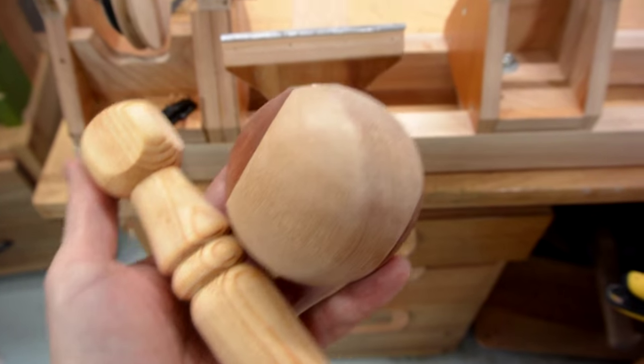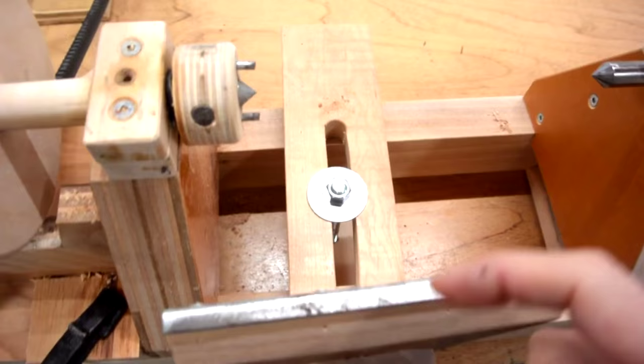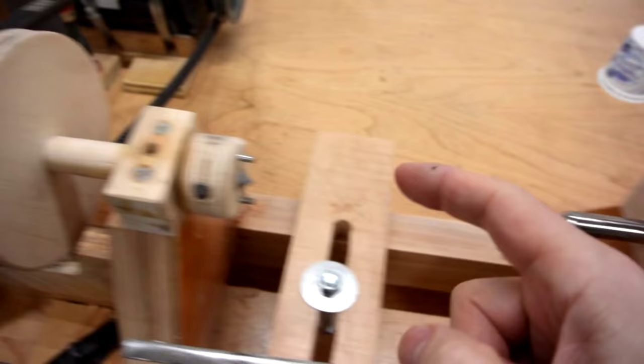Having made a few small things on this lathe, there's a few things I want to improve. This tool rest is too annoying to adjust with a wrench. I need a better way of advancing this thing on the tailstock. This thing rattles a bit too much, and I need a better way to mount the motor.